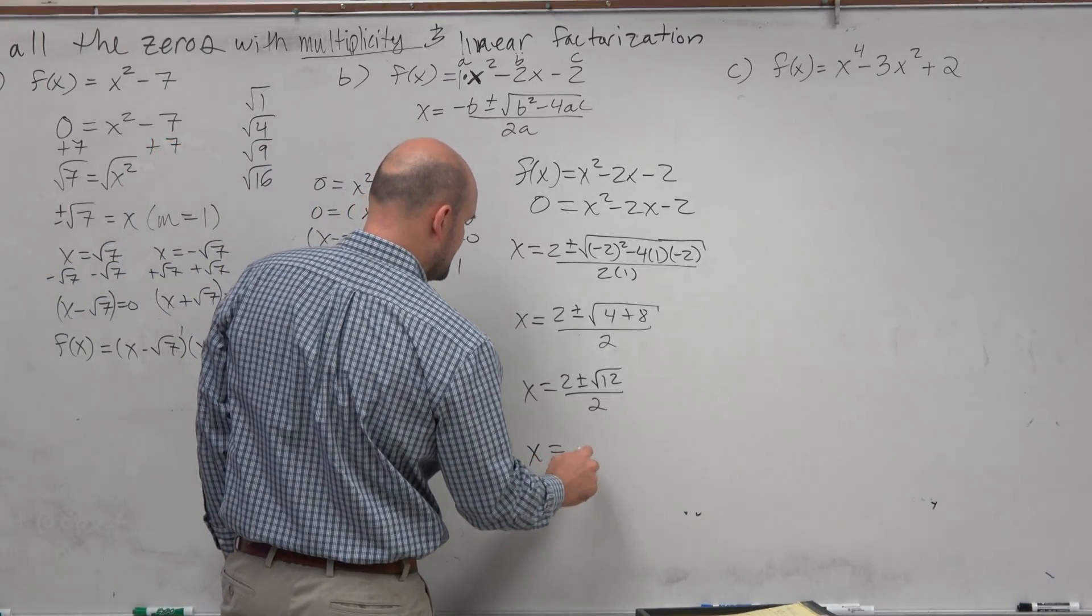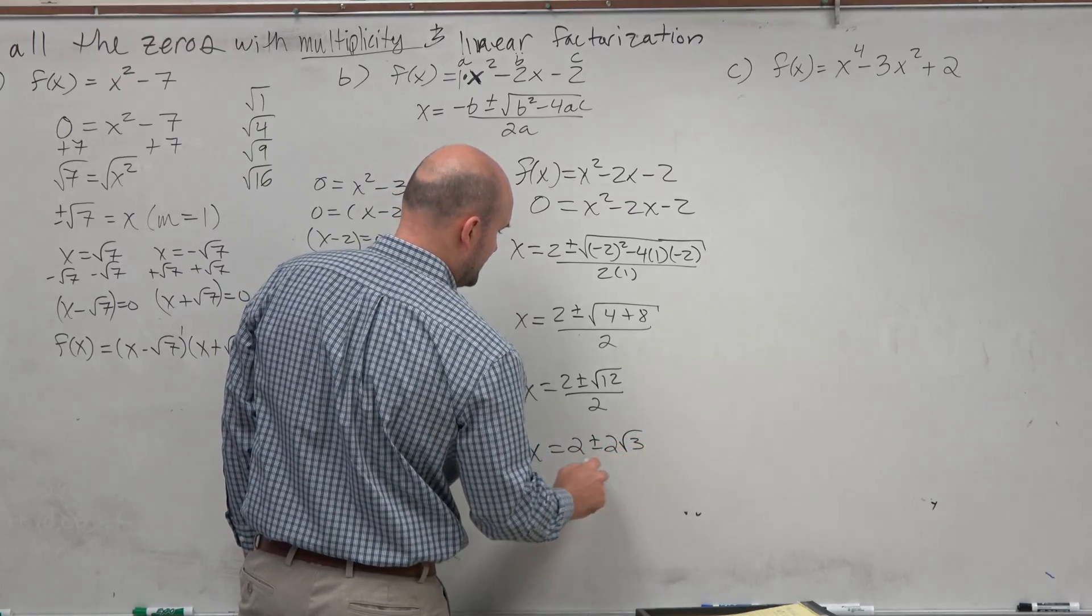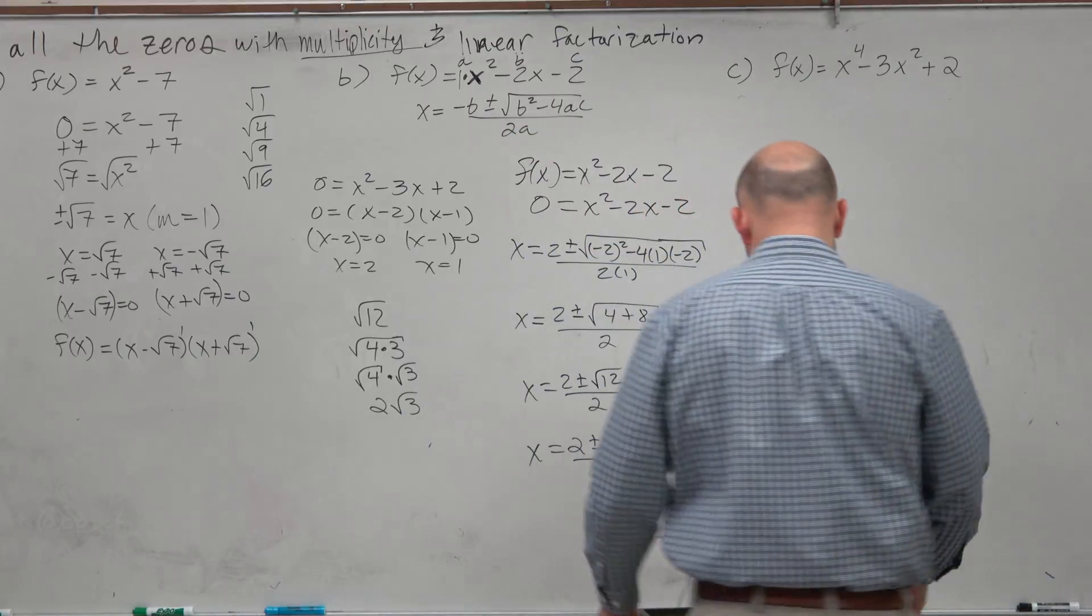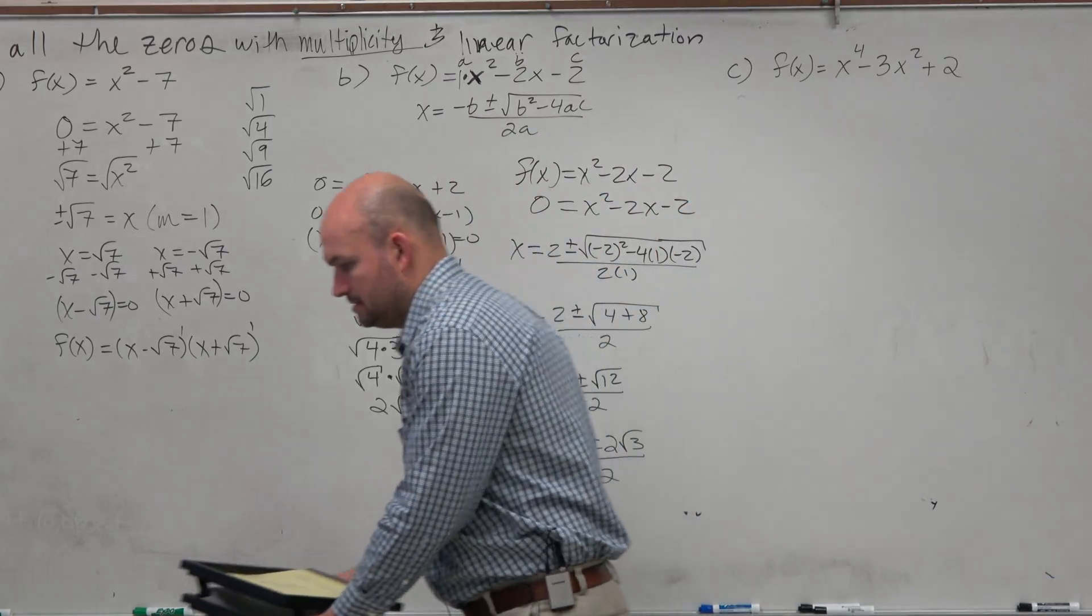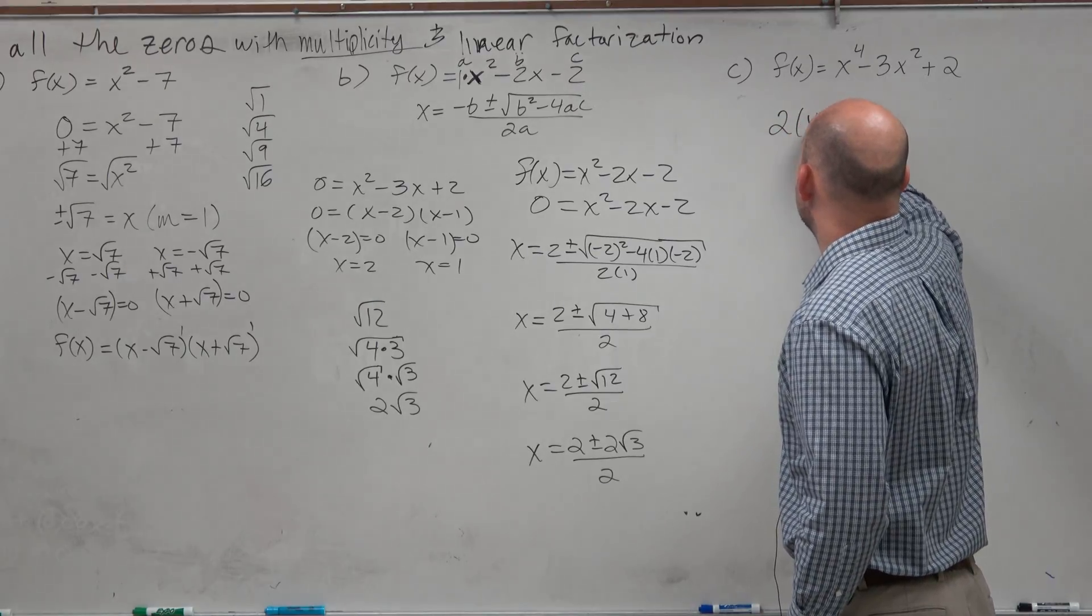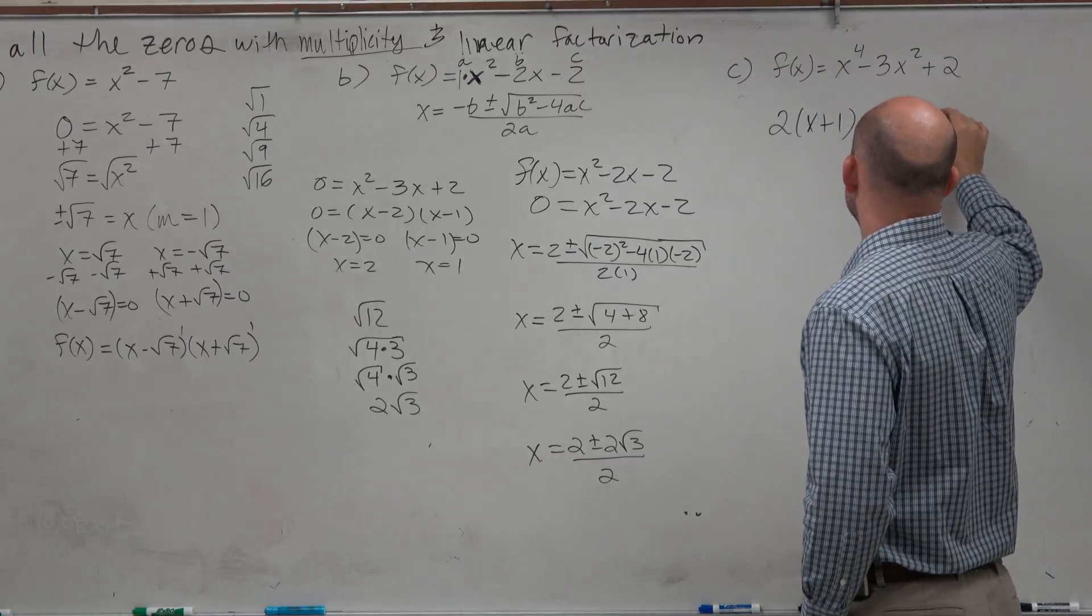So x = (2 ± 2√3)/2. Now the next thing that we have is continuing to simplify this. Remember guys that 2 times (x+1) equals 2x + 2.